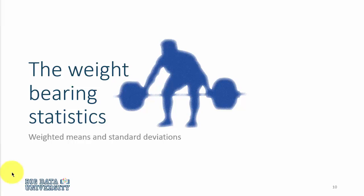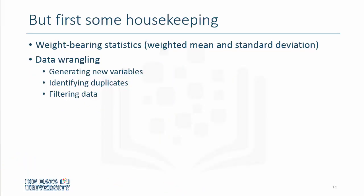In addition, I will also talk about some housekeeping matters. To reproduce Table 1 in the Hammermish study, we need to generate new variables. We also need to learn how to identify duplicates and filter data.